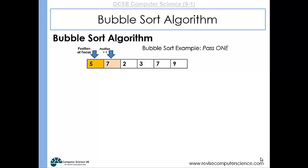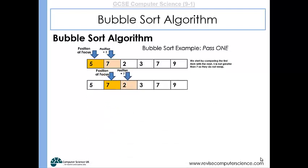They are in the right order so we increment the position of focus up by one so that we are now looking at the seven and the position after that. So the seven and two are now compared. Because the seven is greater than two, it's in the wrong order so they swap.